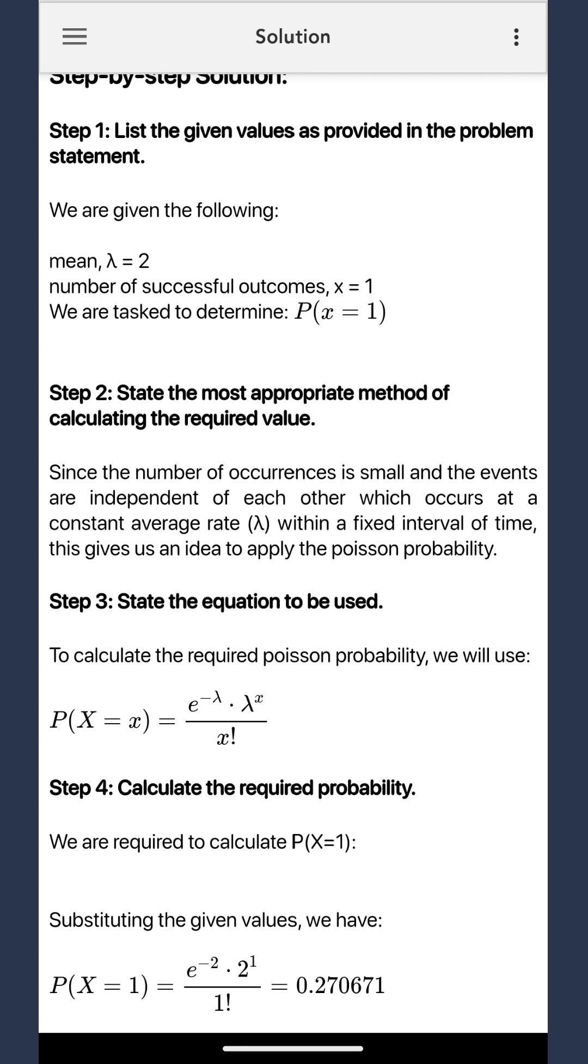In reality, the probability isn't 0.5. The Poisson distribution takes into account the randomness and fluctuation in real-world scenarios when modeling the average rate of events occurring within a fixed interval. It's a fascinating insight into how randomness and variability play a role in probability.